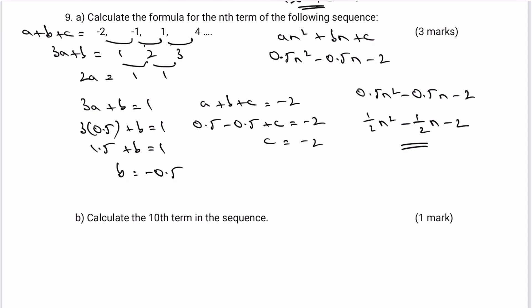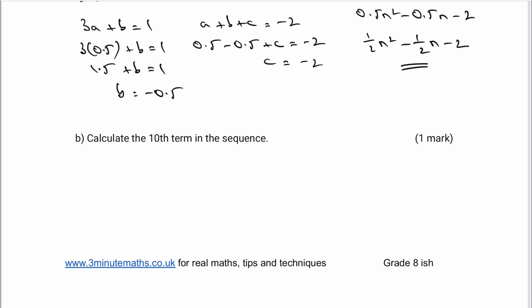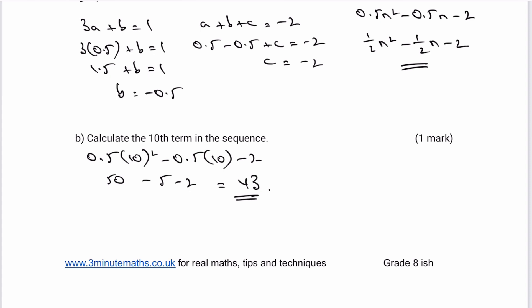Part b asks us to calculate the 10th term in the sequence. Substituting n equals 10: 0.5 times 10 squared minus 0.5 times 10 minus 2. Using order of operations, 10 squared is 100, so a half of 100 is 50, minus a half of 10 which is 5, minus 2, giving us 43 as the 10th term.